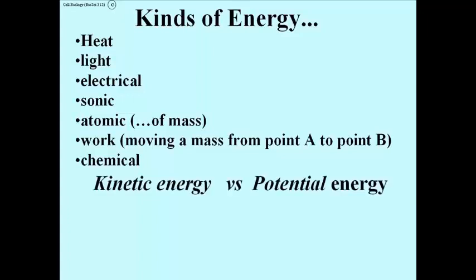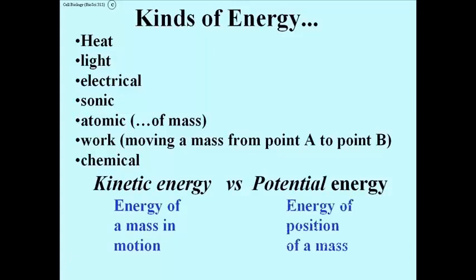The other kinds of energy you might remember are kinetic energy versus potential energy. Kinetic energy is the energy of a mass in motion, whereas potential energy is the energy of position of a mass. We've already encountered this with the position and motion of electrons in an atom.